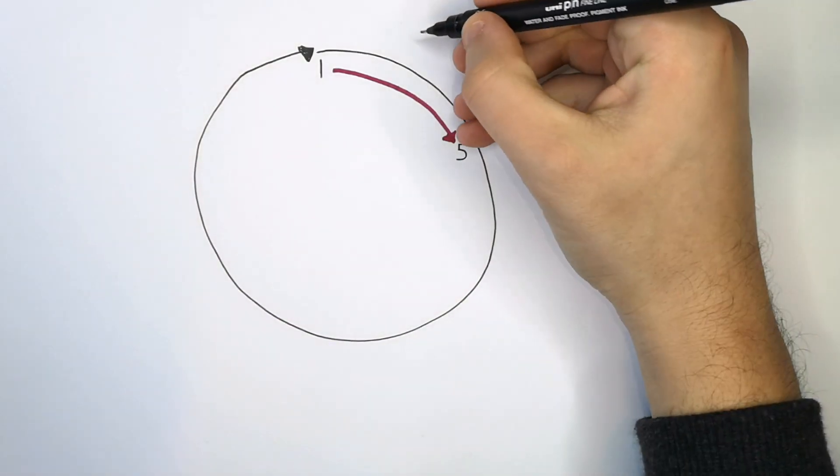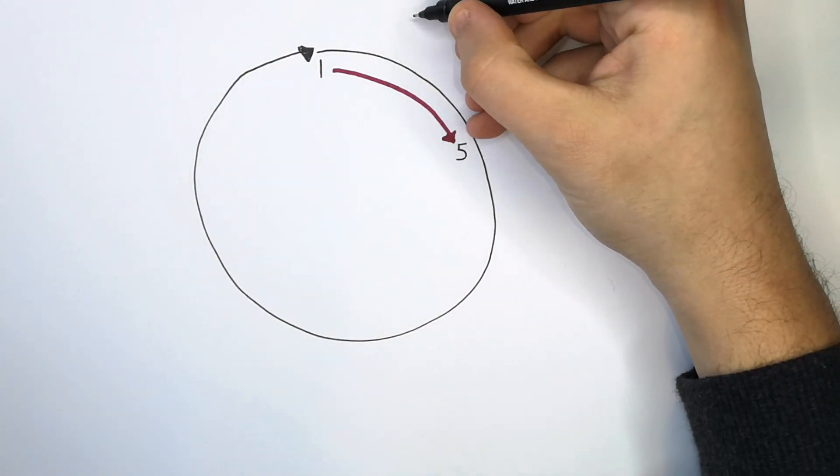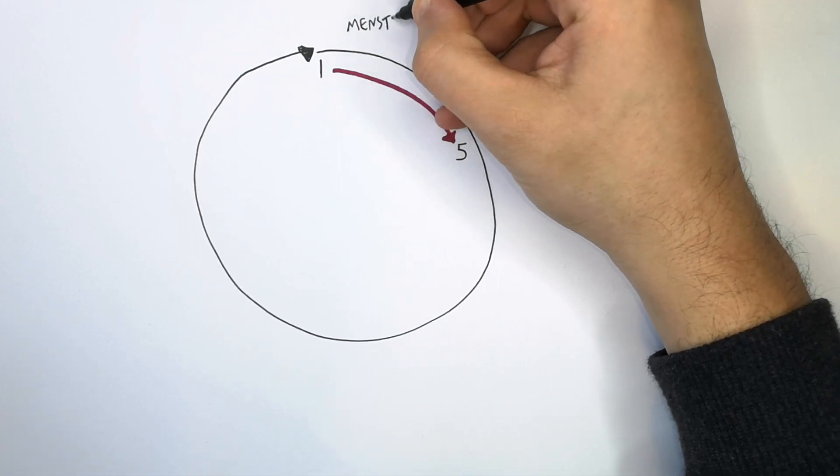During days 1 to 5 is the first stage of the menstrual cycle. And this is when menstruation happens.